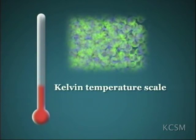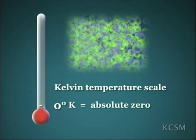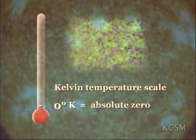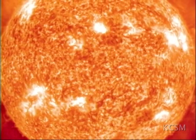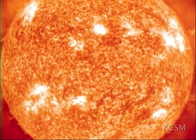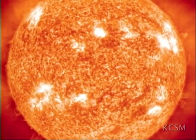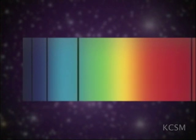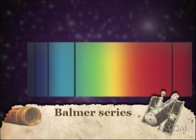Zero Kelvin, or absolute zero, is the coldest possible temperature where there is no motion of the atoms. At their surfaces, stars range from about 25,000 to 30,000 Kelvins, equivalent to about 45,000 to 55,000 degrees Fahrenheit. The easiest way to measure a star's temperature precisely is by observing the absorption lines of hydrogen in the visible part of the spectrum. These are called the Balmer series.